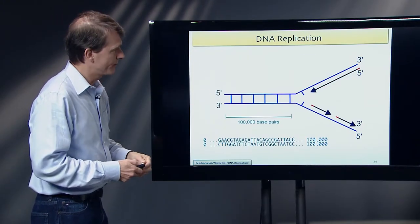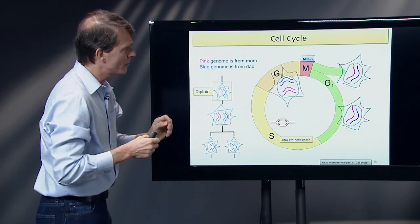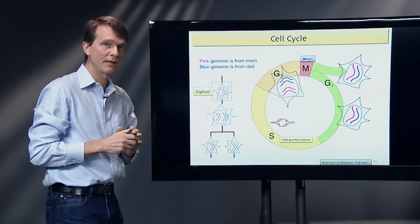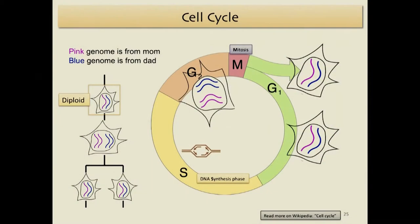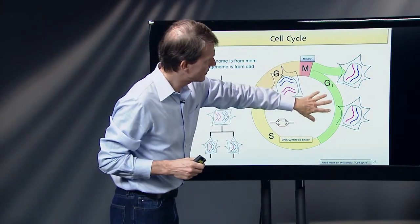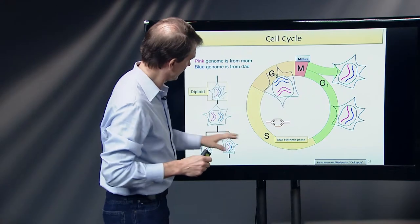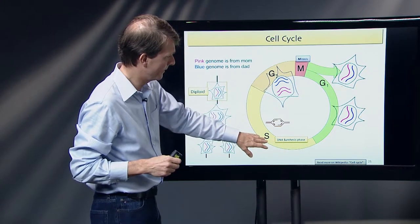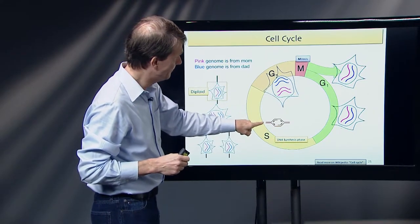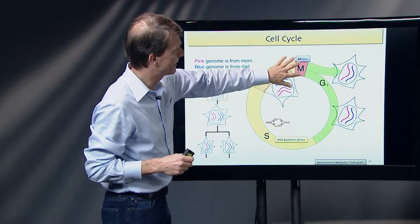To orient you on where and when DNA replication occurs in the cell cycle: for a diploid cell — one chromosome from mom and one from dad — to divide, it has to grow, make more protein, and at some point decide it's big enough and needs to make two copies of each chromosome. This is the cell cycle. The cell does its job and grows, then at the S phase — DNA synthesis phase — it duplicates and replicates DNA. Once the DNA is duplicated, the cell can undergo mitosis and divide.